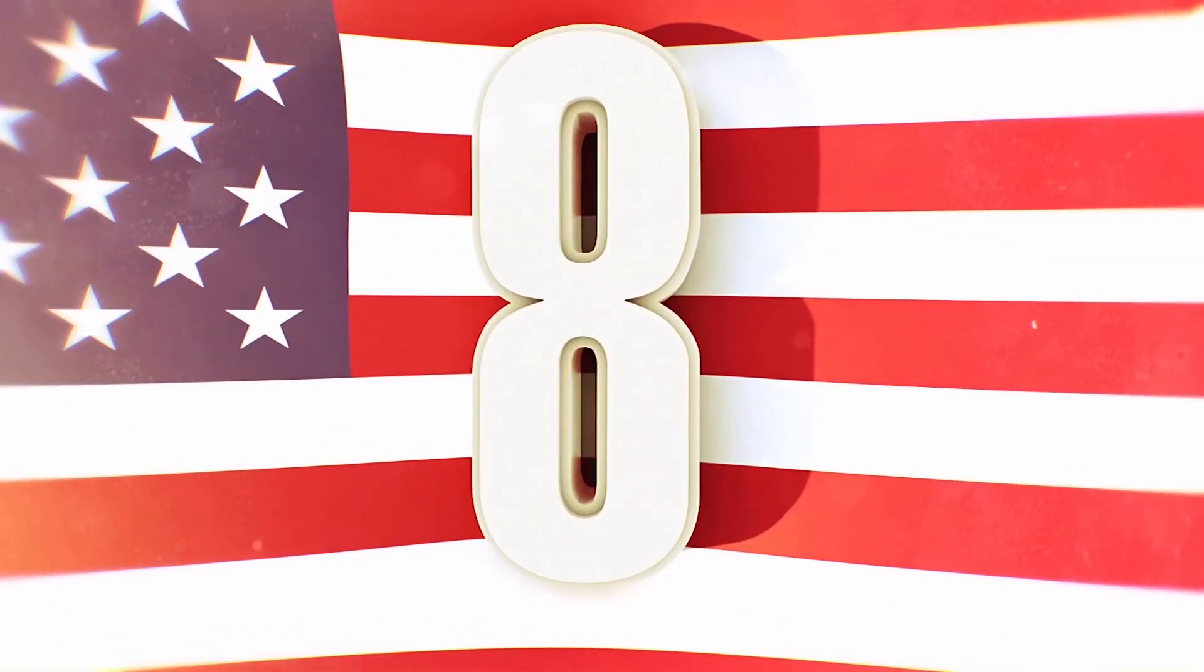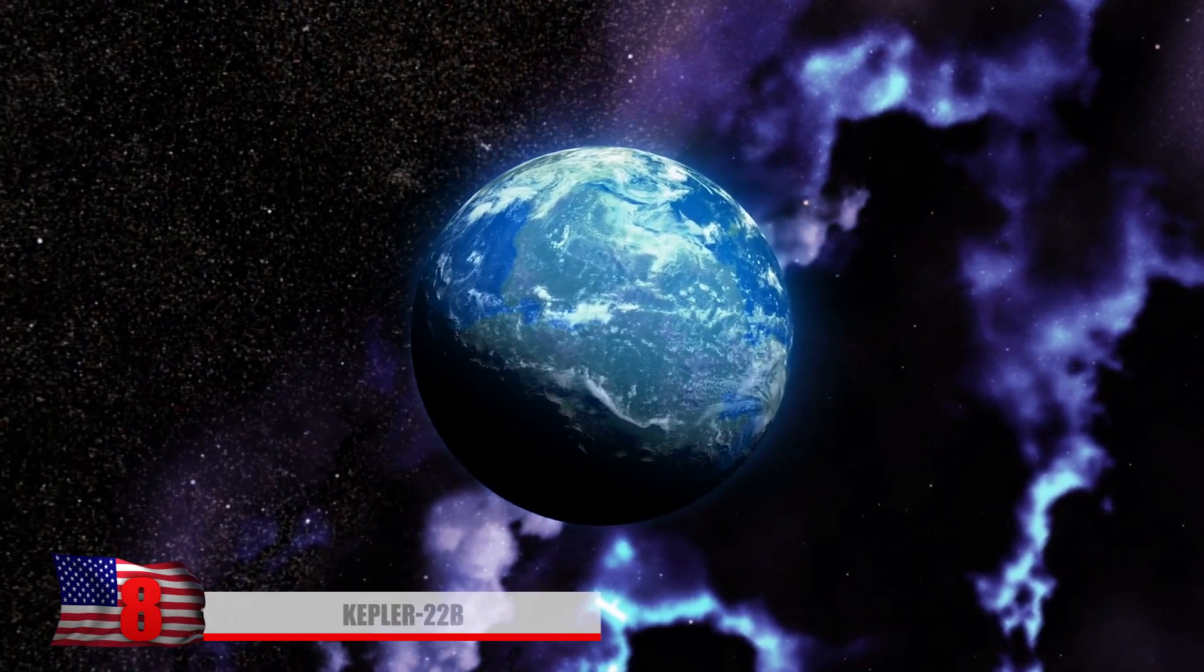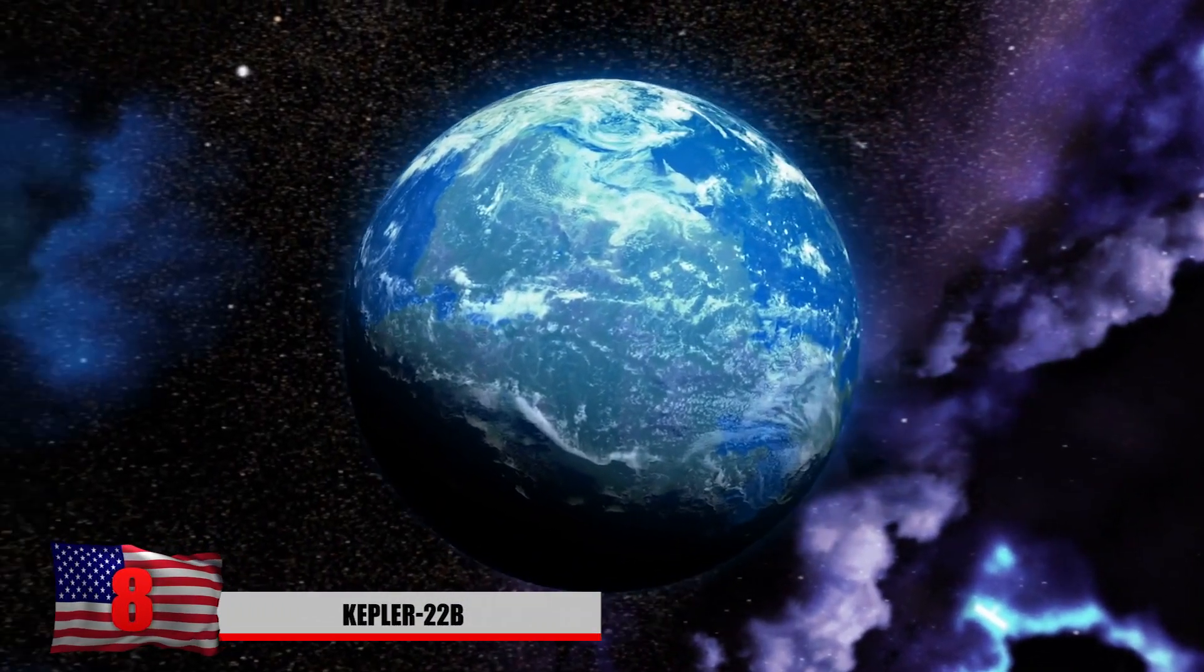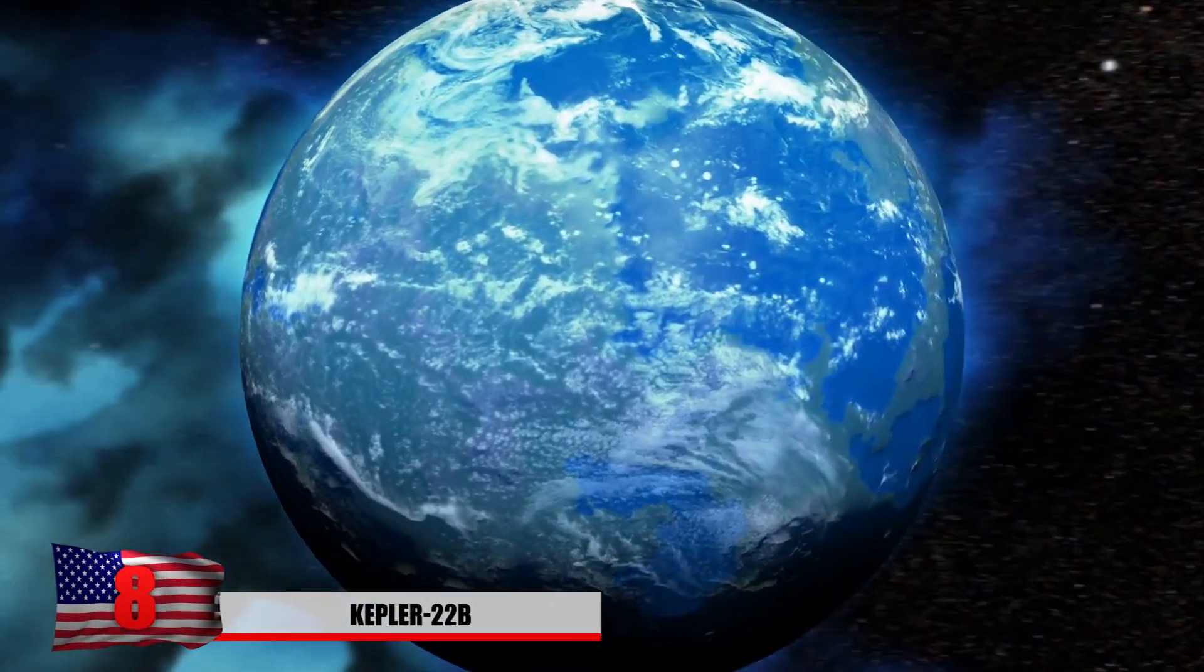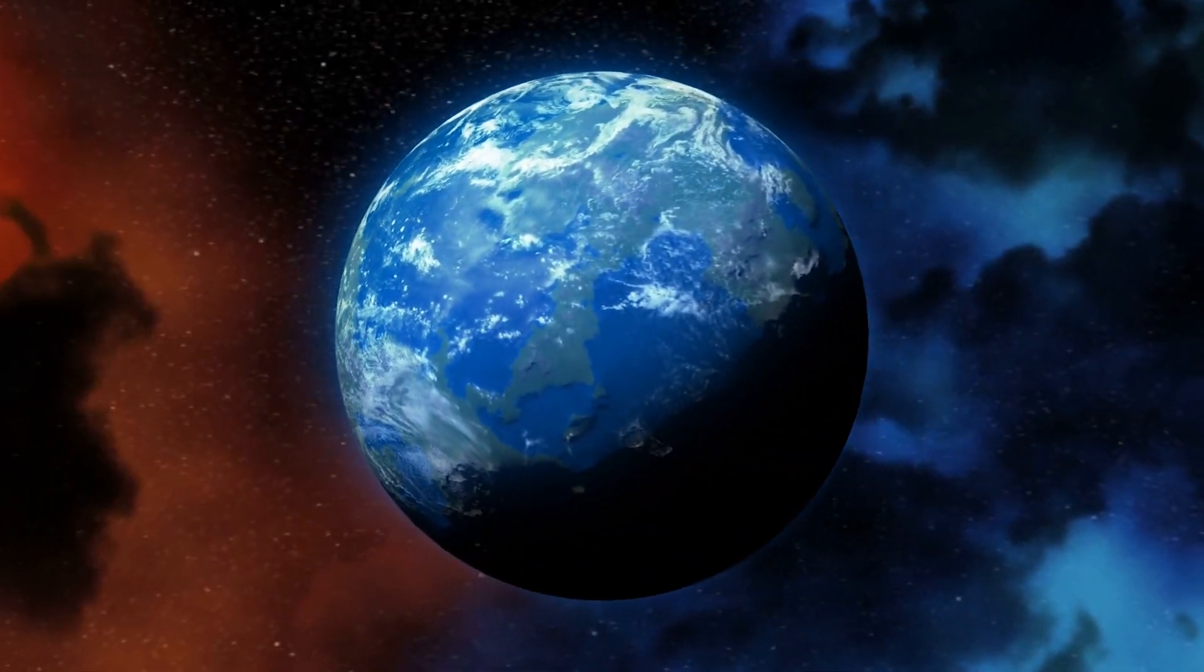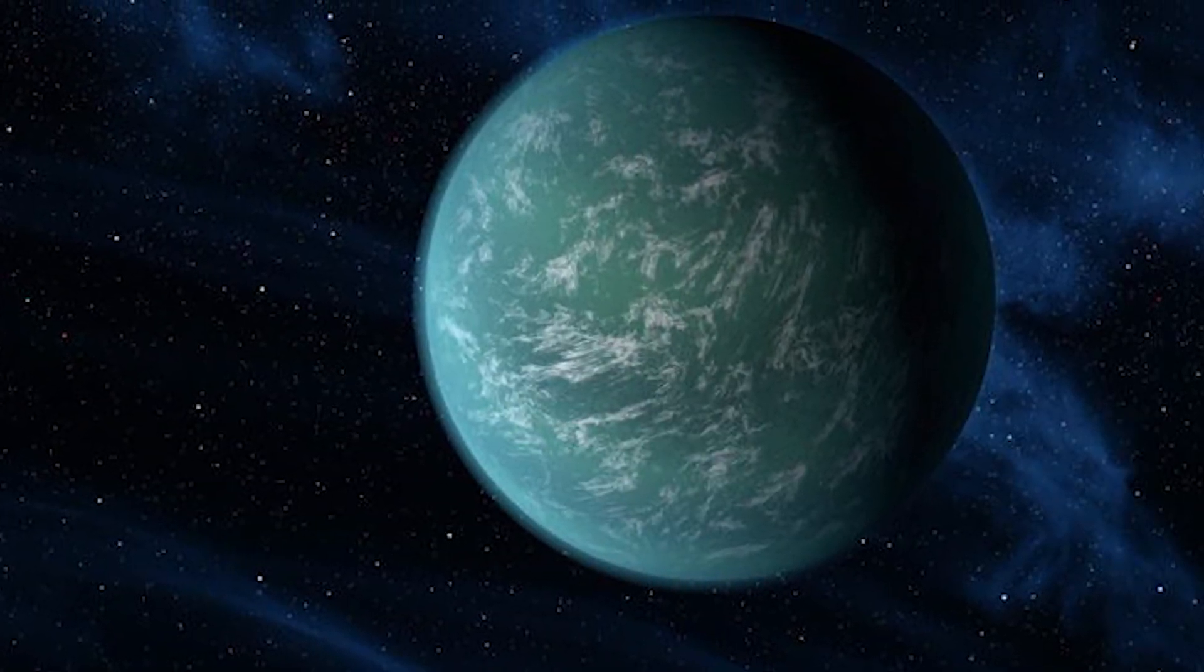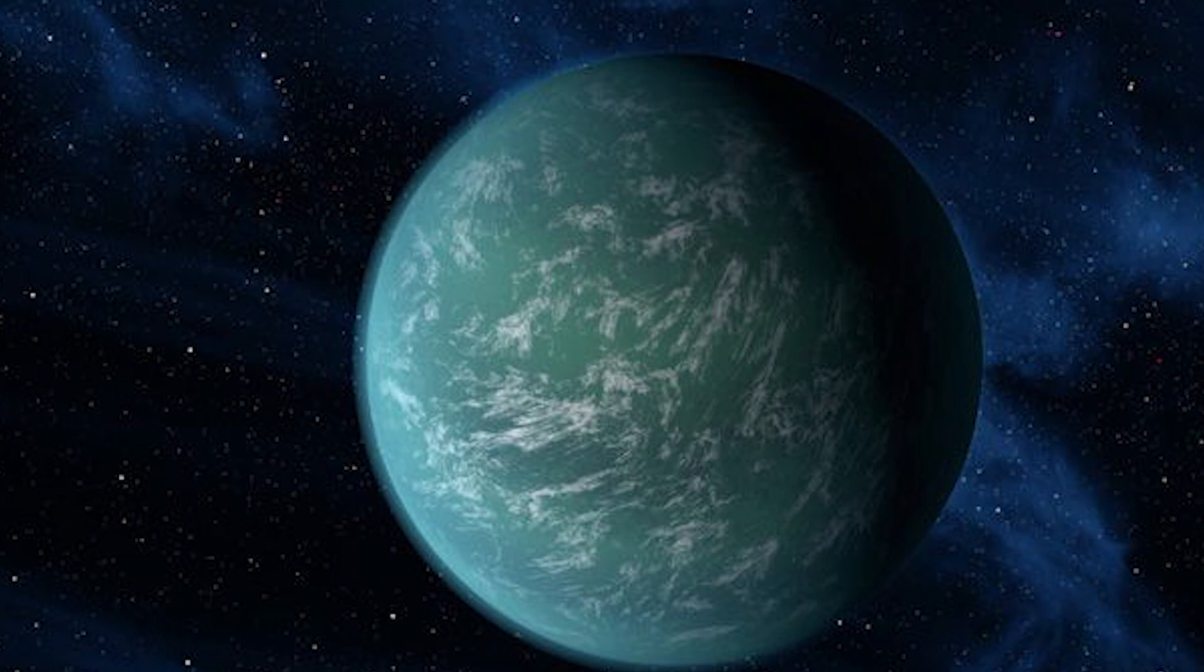Number 8, Kepler-22b. Imagine a planet similar to Earth that was twice the size of Earth but almost completely covered in water. Scientists don't know exactly for sure if this one has liquid water because it's about 620 light-years away, but it seems very possible. This was discovered by the Kepler Space Telescope in 2011 and it also appears to be in the right exact location of a habitable zone.